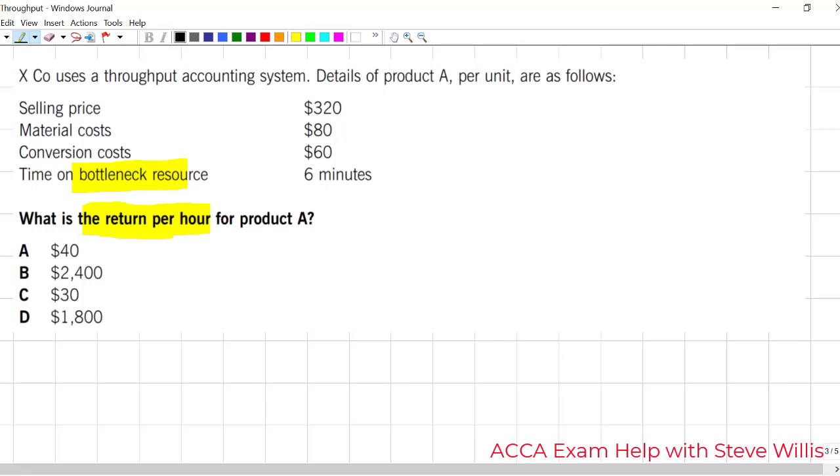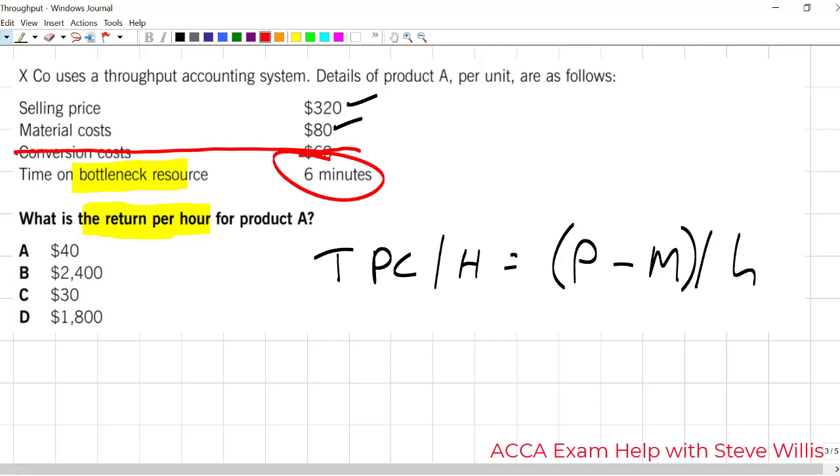So I just deploy my formula. The throughput contribution per hour is simply going to be price minus direct materials over the time on the bottleneck. And we have everything we need. We've got a price. We've got materials. We don't need this one. If you remember conversion costs from management accounting, that would be the direct labor and the variable overheads that go into a process. Time on the bottleneck is 6. So if we're in a big rush, we're going to do this in a hurry. And we're going to go 320 minus 80, put that over the 6. And we'll get one of the answers here.